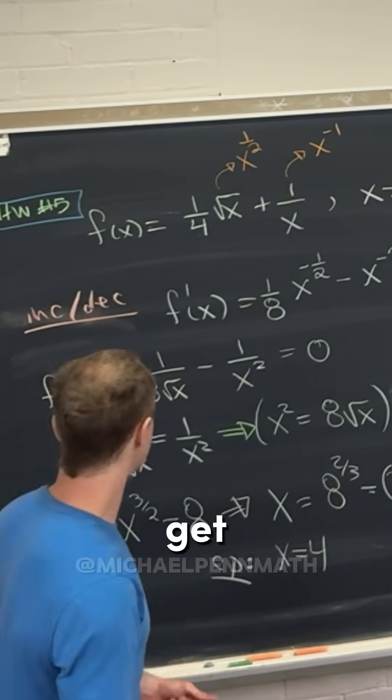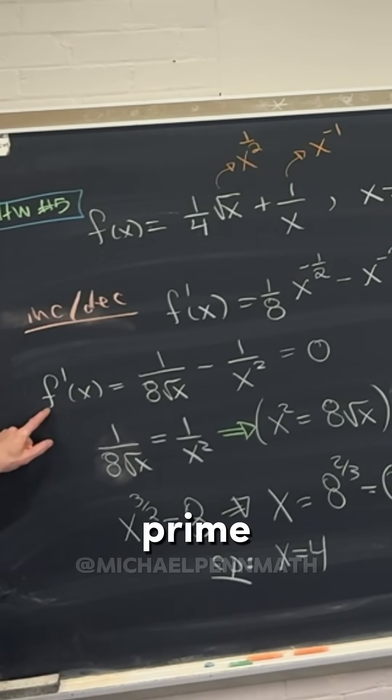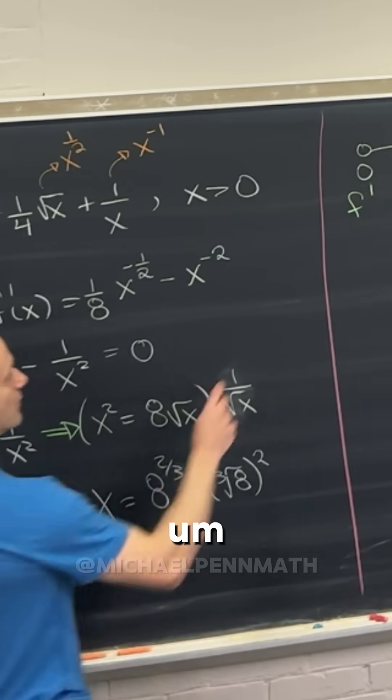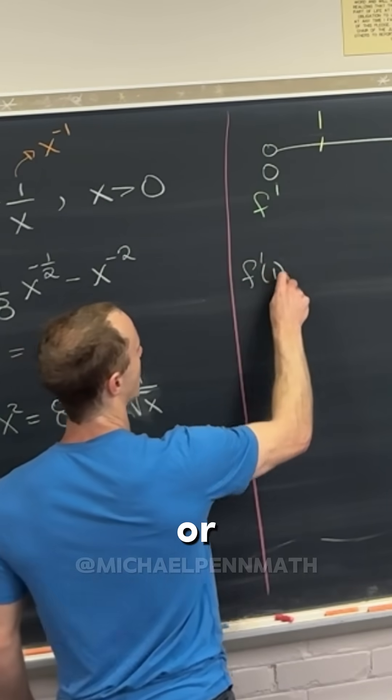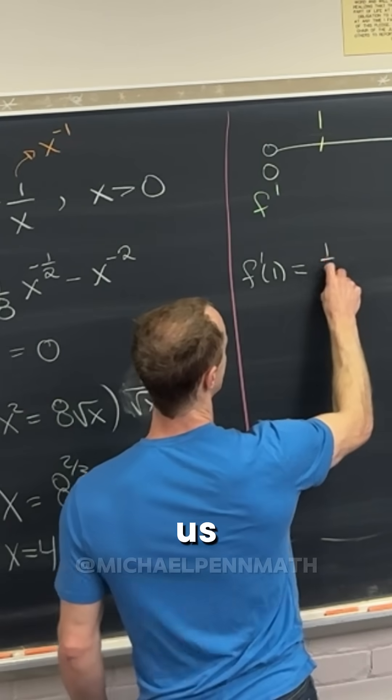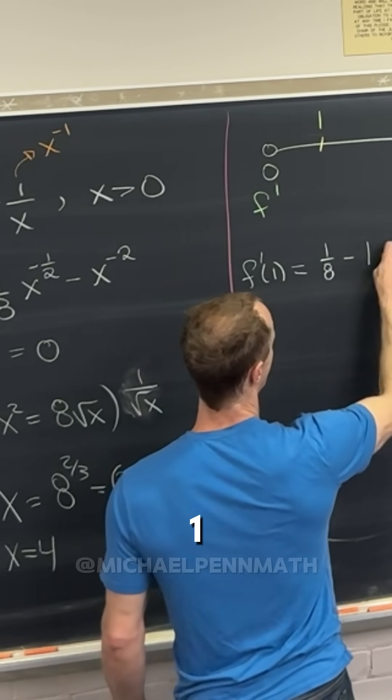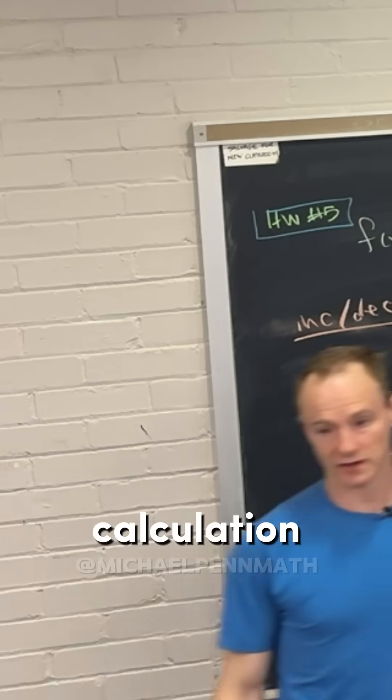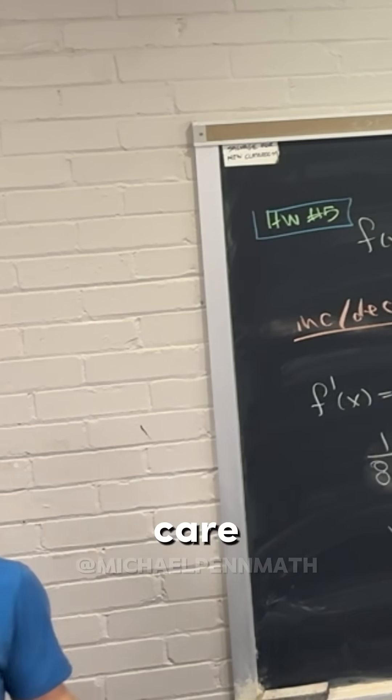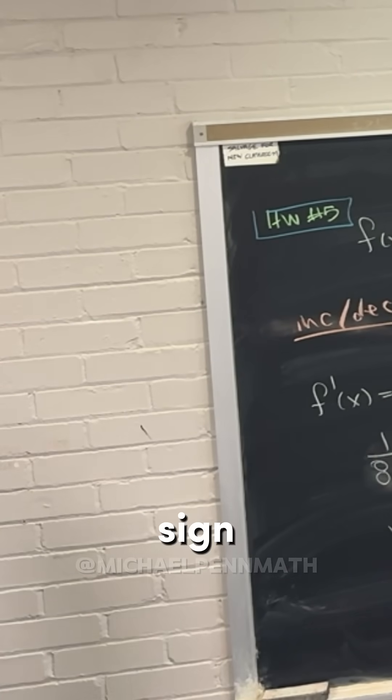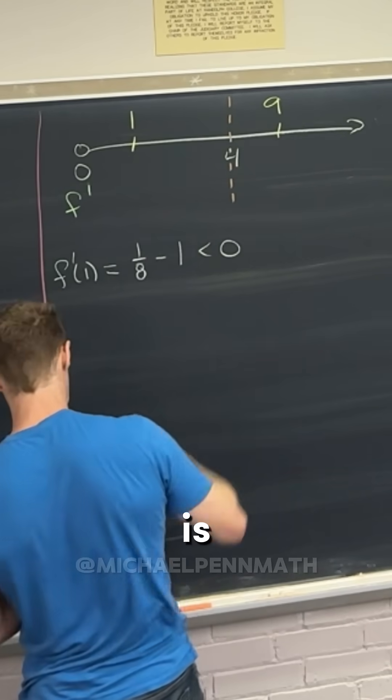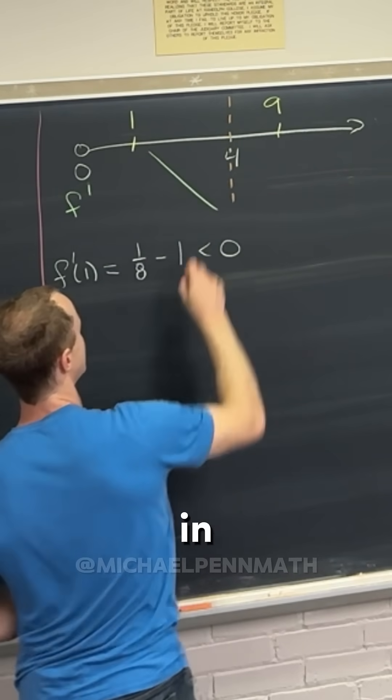So now let's see what we get. If we do f prime of 1, is that positive or negative? That gives us 1 over 8 minus 1. I don't need to do the calculation. I know that's negative. We actually don't care what the number is, just the sign. So the function is decreasing in this region.